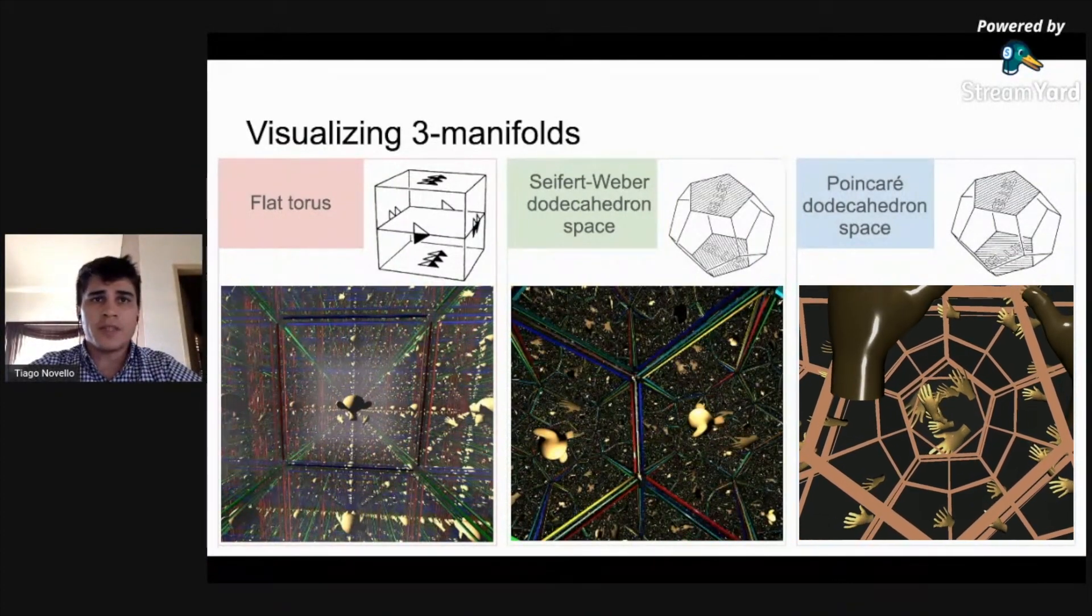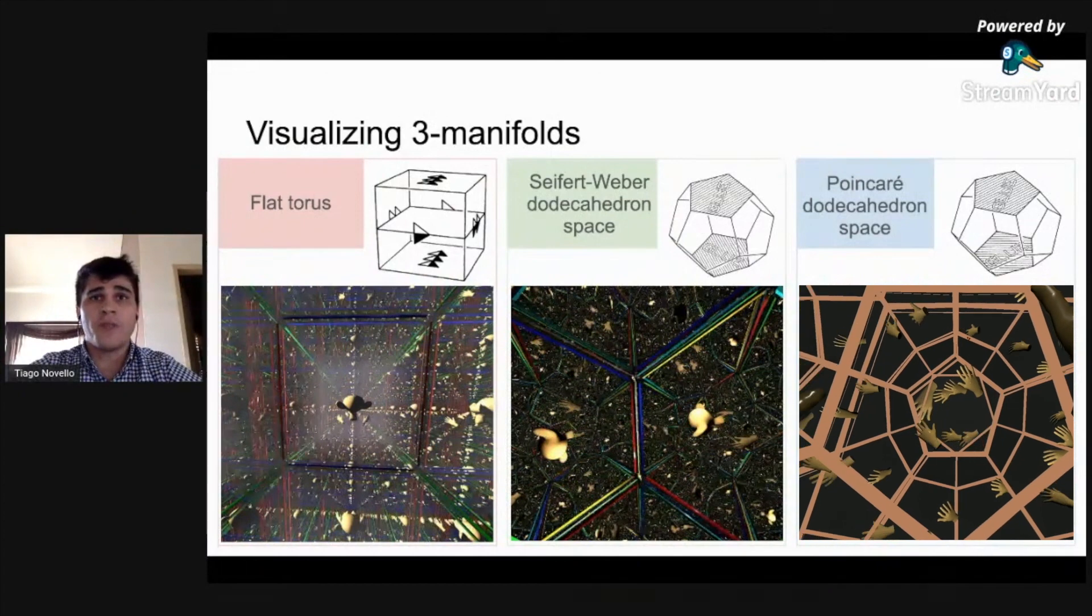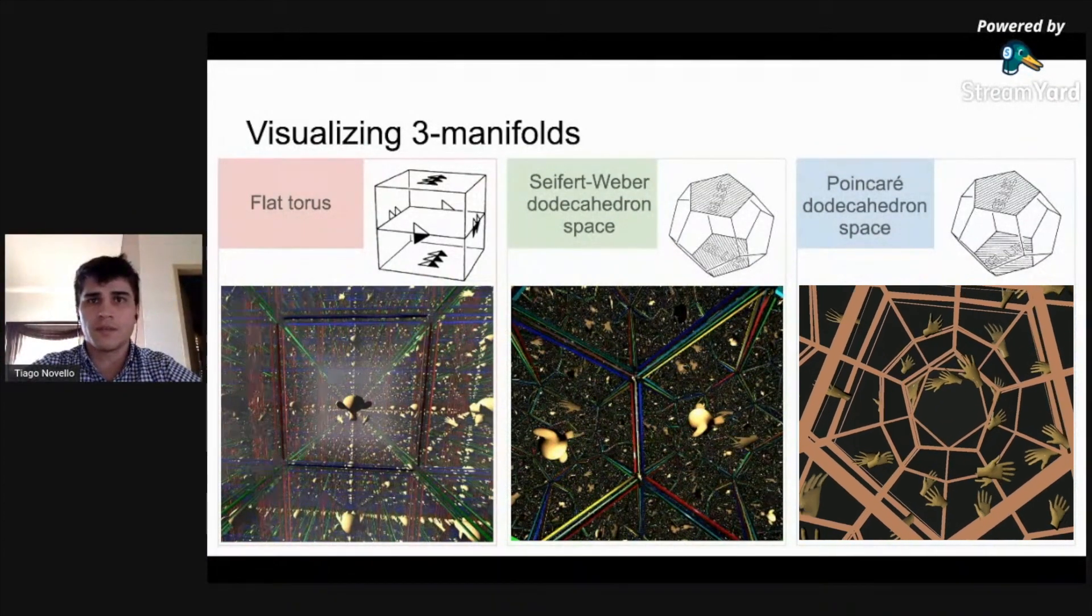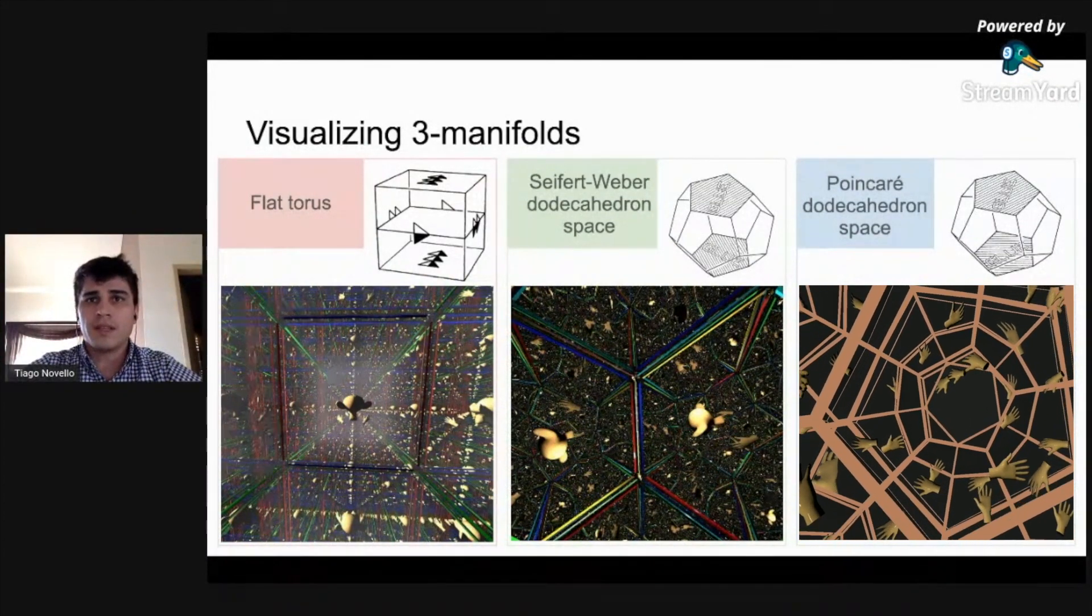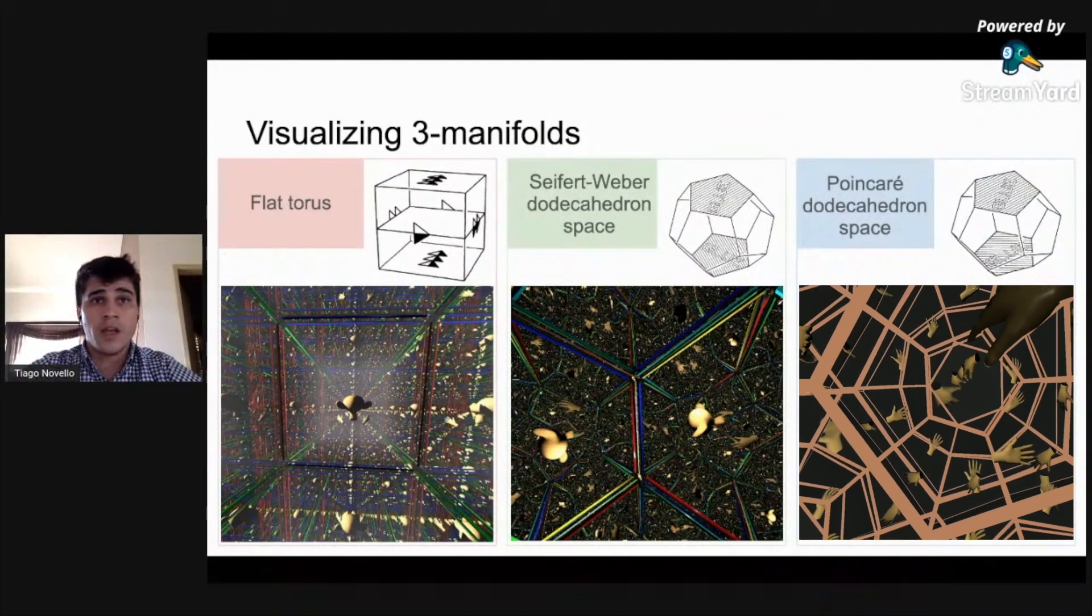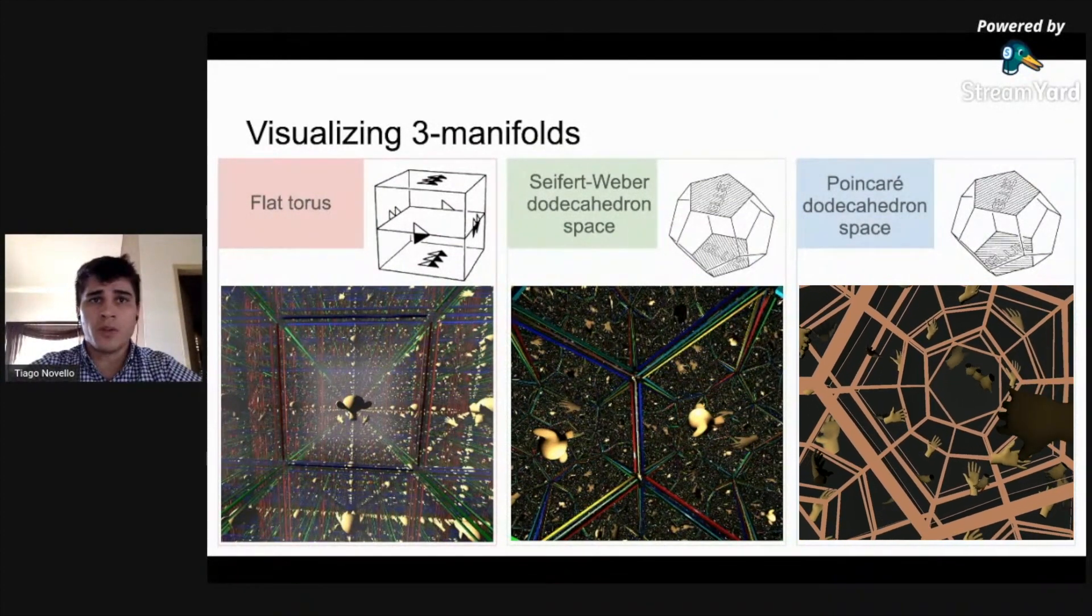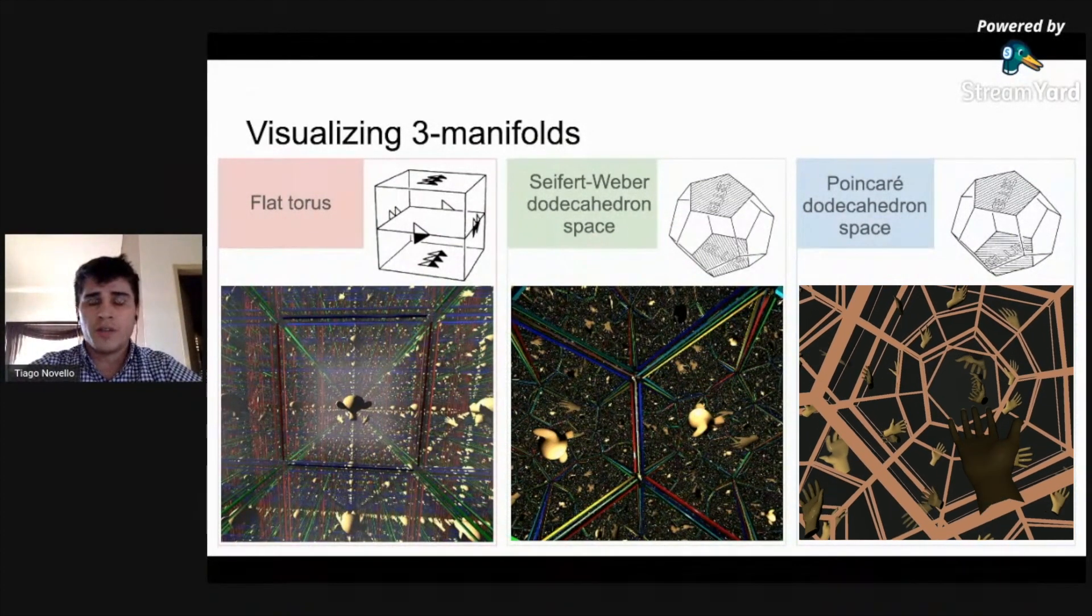Finally, the right side presents an inside visualization of Poincaré dodecahedral space. Again, this tessellation of the sphere by dodecahedra resulted in a regular polytope called the 120-cell.